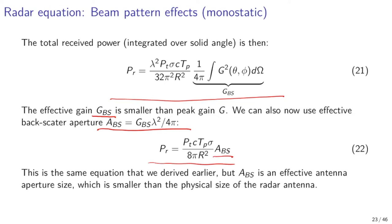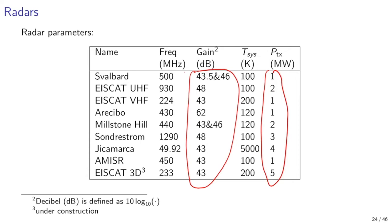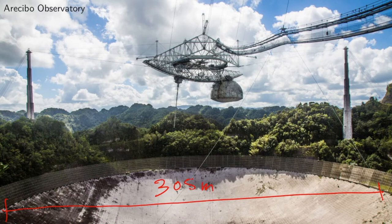Here are performance parameters for some selected incoherent scatter radars. What is common to all of them is that transmit power and antenna gain are very high — for example, a gain of 48 dB means the incident power delivered to the plasma volume is nearly 100,000 times larger than for an isotropic radiator. The most sensitive incoherent scatter radar in the world is the Arecibo Observatory 430 MHz radar. It has a spherical reflector built into a valley with a diameter of 305 meters, providing a huge collecting area. The radar can use two beams simultaneously using the line feed and the Gregorian dome. Unfortunately, the line feed was destroyed by Hurricane Maria in 2017. This instrument is also used extensively for radio astronomy and planetary radar.